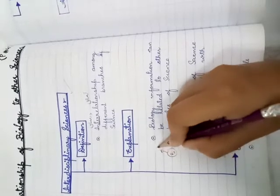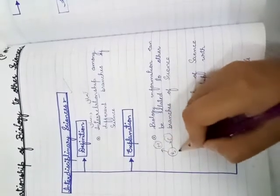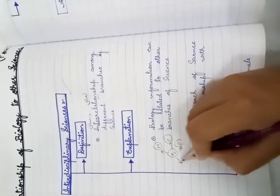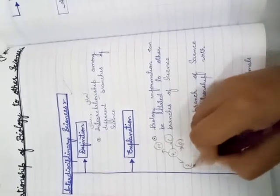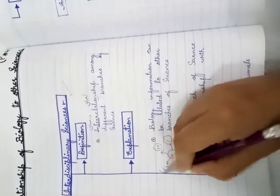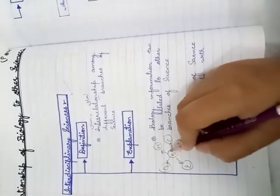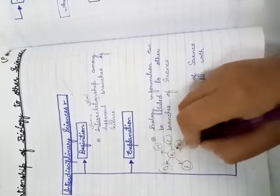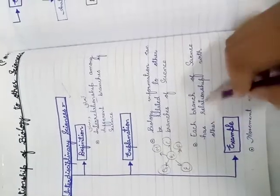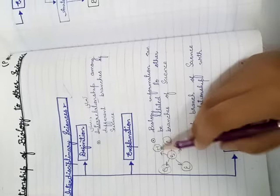For example, biology relates to maths, chemistry, physics, economics, and geography. Each branch of science has a relationship with others — you can relate and learn from these connections.